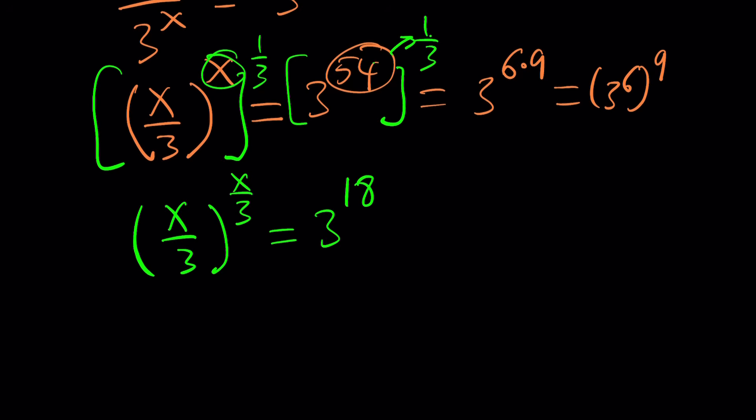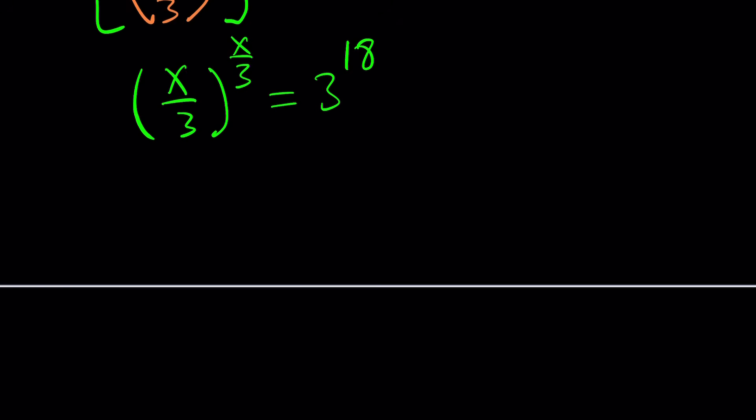Now, we accomplish one thing, which is super important. The base and the exponent are the same on the left-hand side. So we need to do the same thing on the right-hand side. And that can be done very easily. So what we can do is notice that 18 can be written as 2 times 9. And this can be written as 3 to the second to the power of 9, which is 9 to the power of 9.